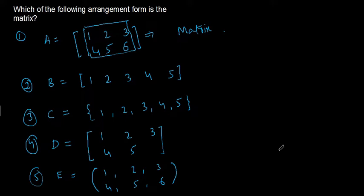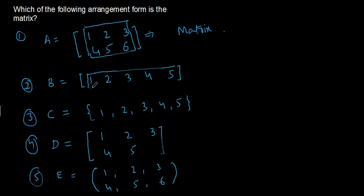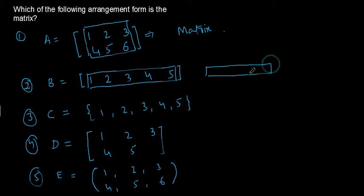Similarly, arrangement B is enclosed in square brackets with one row and five columns. If you construct straight lines around them you get a rectangle. So B is a matrix.